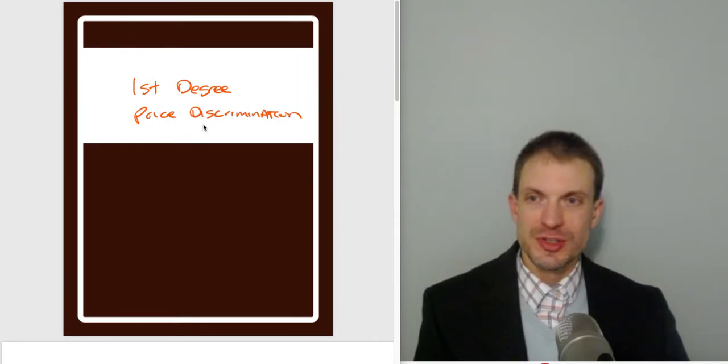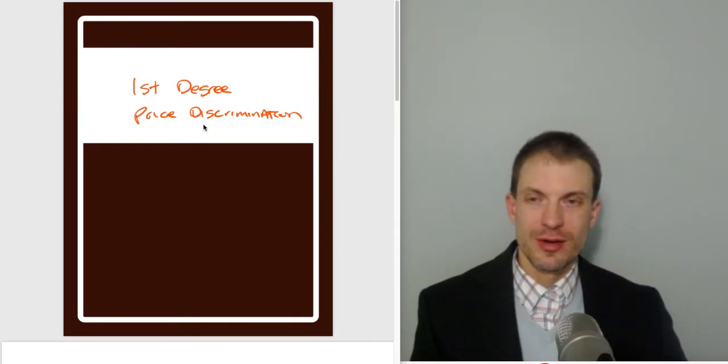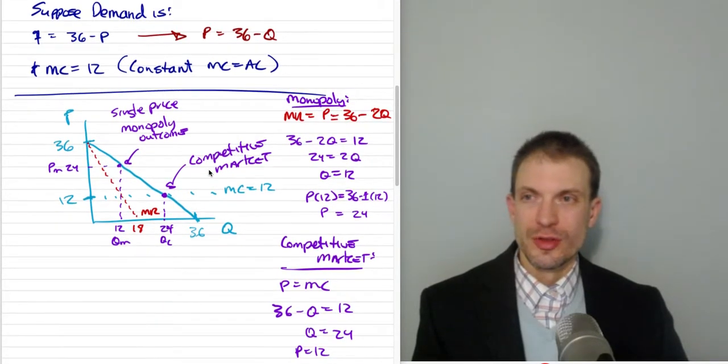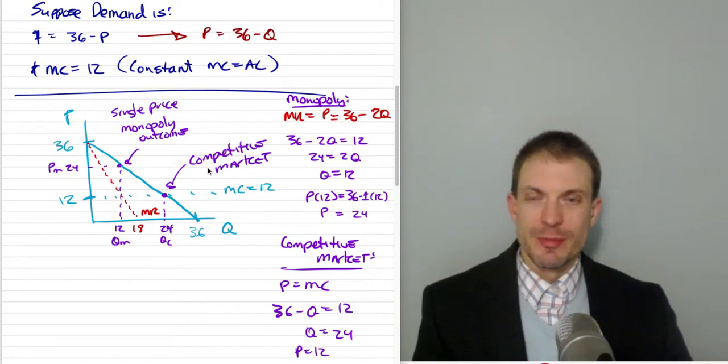We primarily use this as the gold standard that a monopoly or firm with market power might be striving for. In practice there's not a lot of cases that do this, although there are things that kind of approximate it depending on what information a firm would be able to have about its consumers.